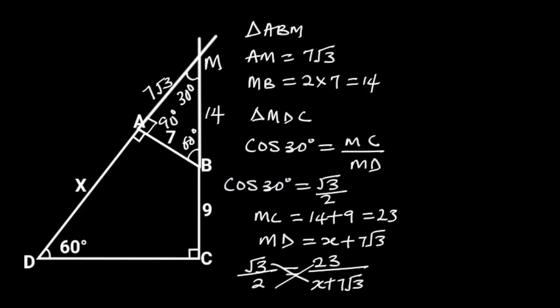By cross multiplication, we will have root 3 times X plus 7 root 3 is equal to 2 times 23.